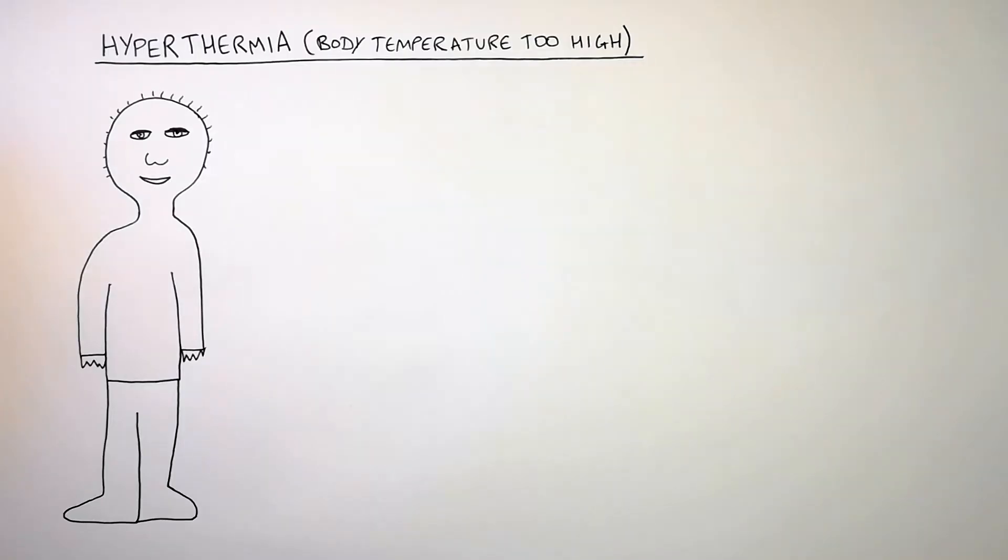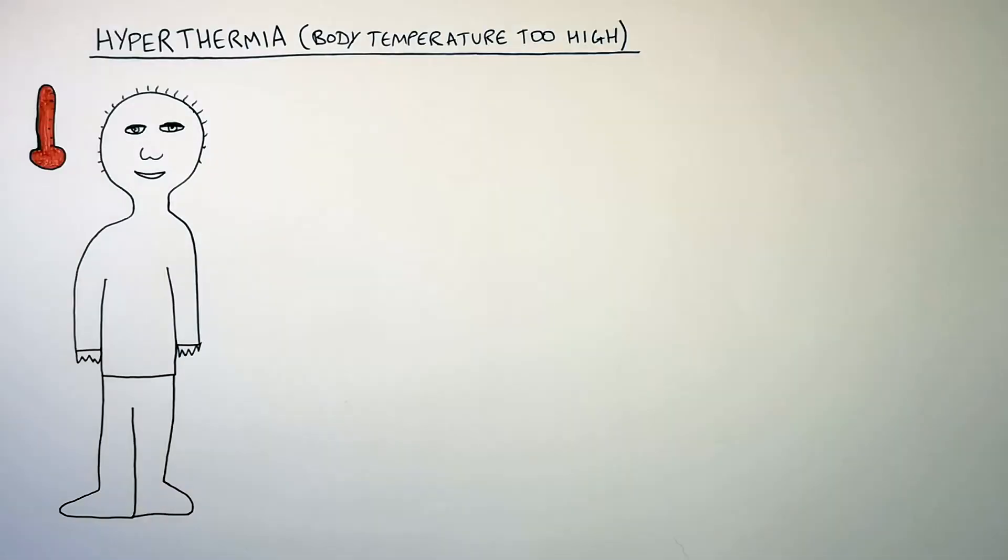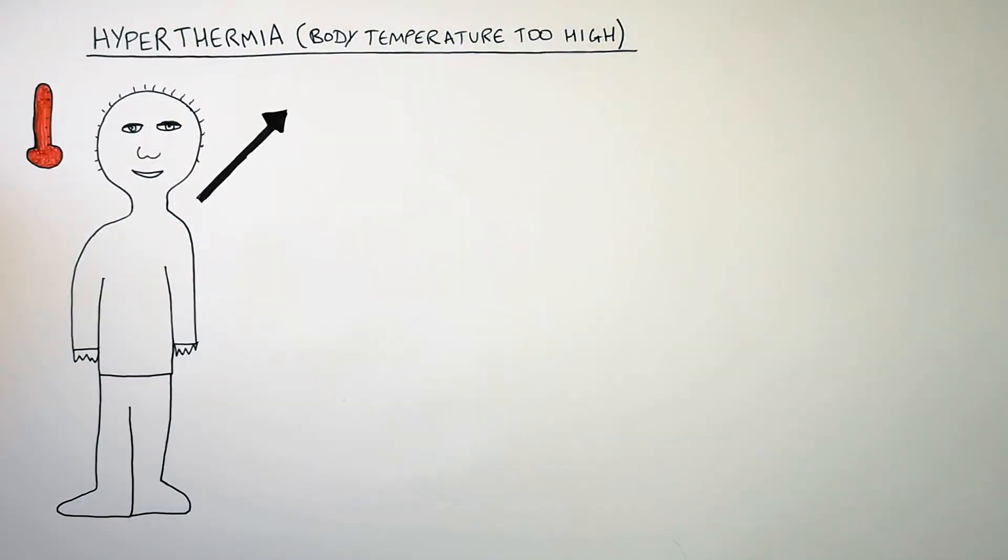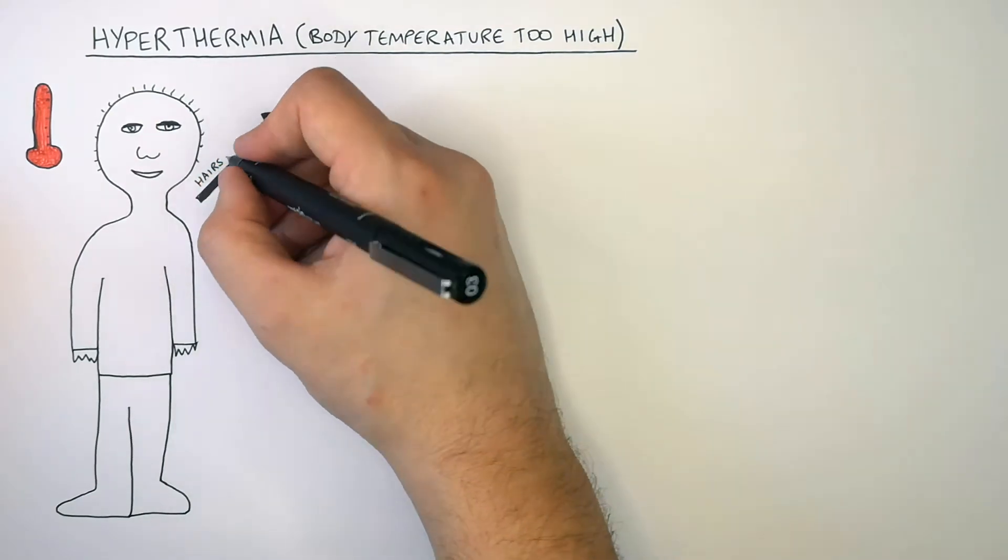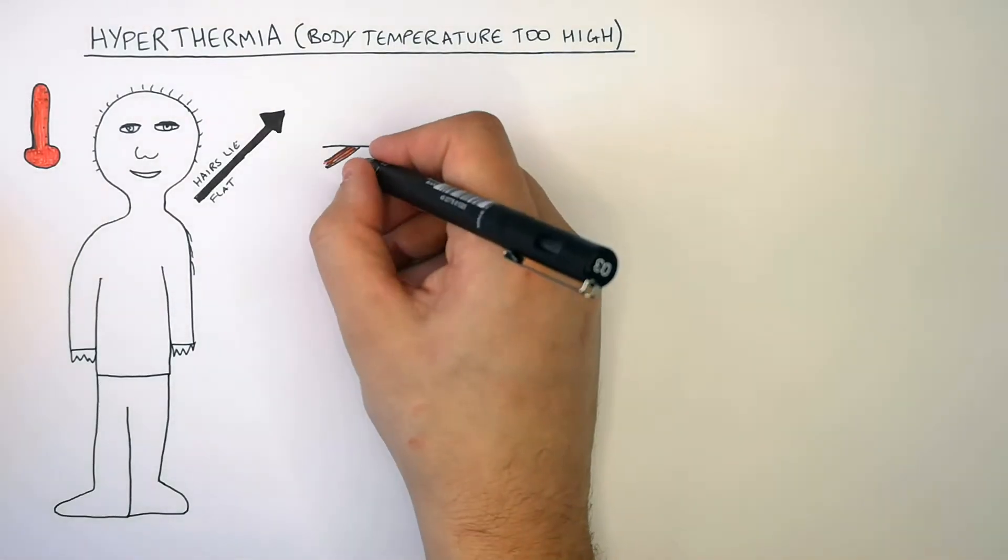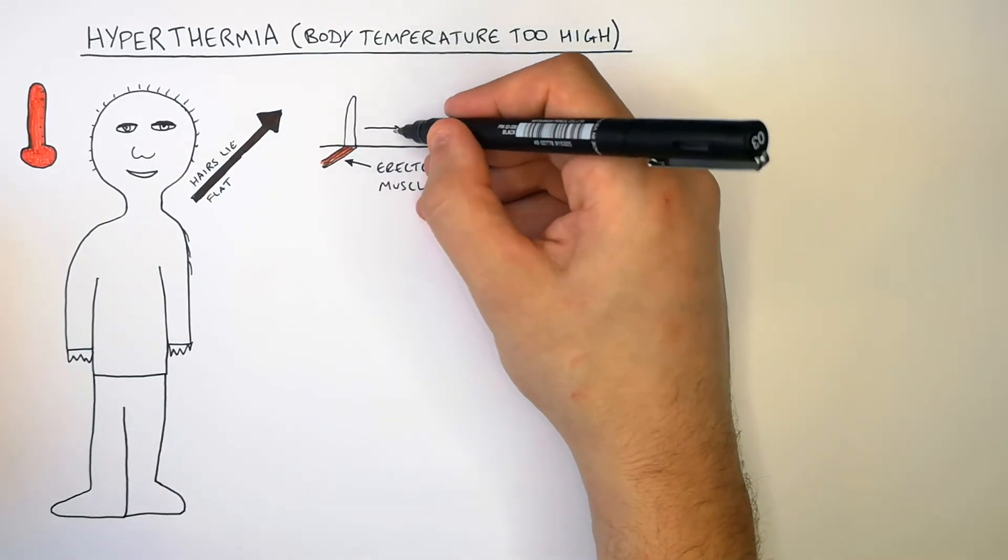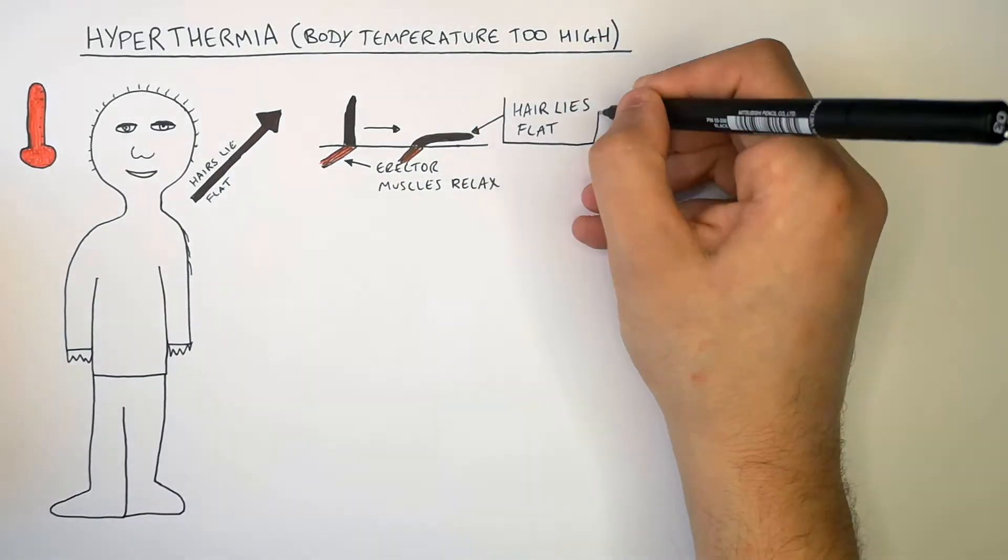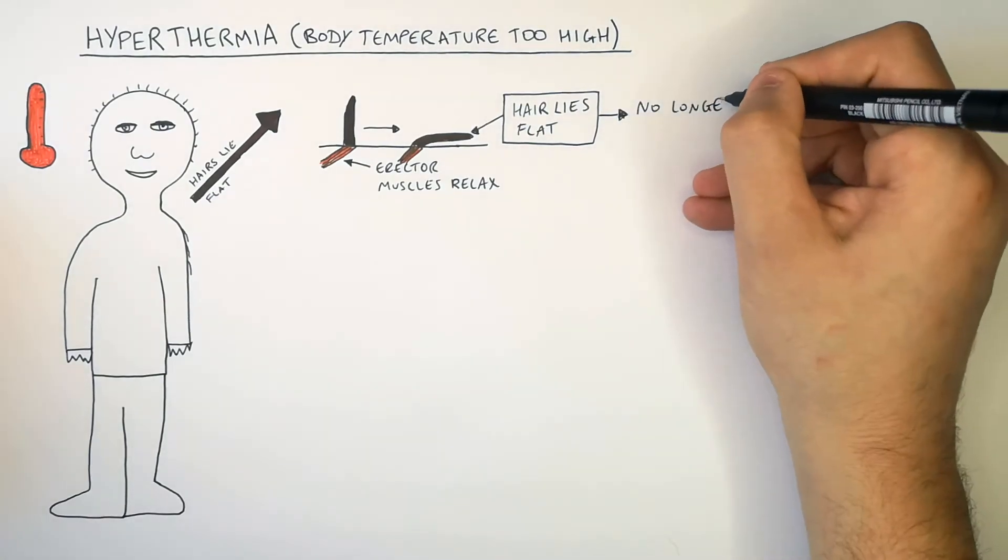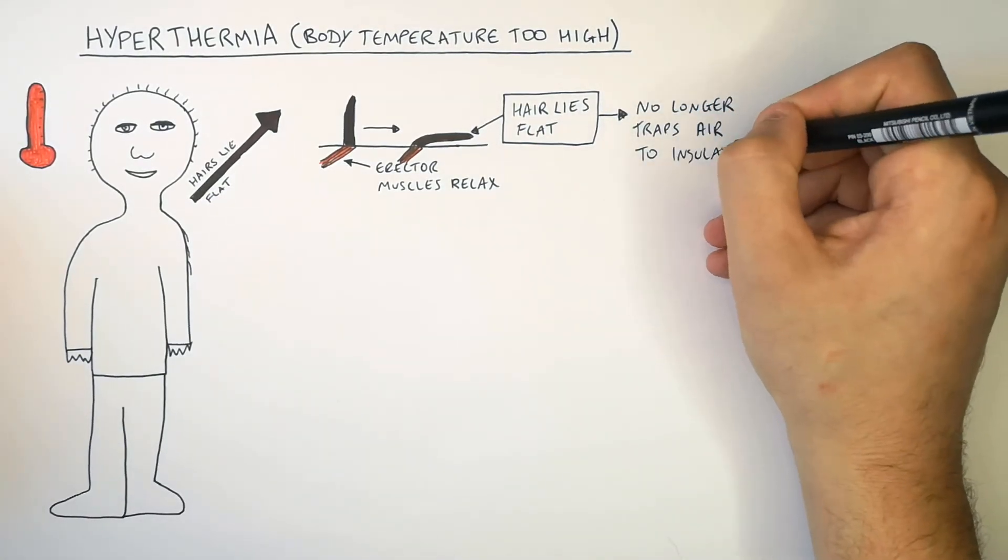We've looked at what happens during hypothermia but what happens during hyperthermia when the body temperature is too high? Well firstly our hairs lie flat. They do not stand upright. This is because the erector muscles relax causing the hairs that were previously standing to then lie flat. So if the hairs lie flat this no longer traps air to insulate mammals.